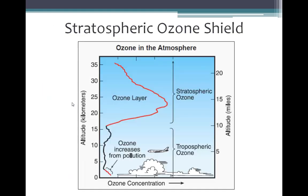This graphic shows ozone concentration with altitude, in kilometers on the left and miles on the right. The ozone layer peaks up in the stratosphere. Ozone in the troposphere, down near the surface, is a pollutant caused by exhaust from cars and factories and its interaction with sunlight. This tropospheric ozone absorbs solar radiation, warms the surface, and causes smog.